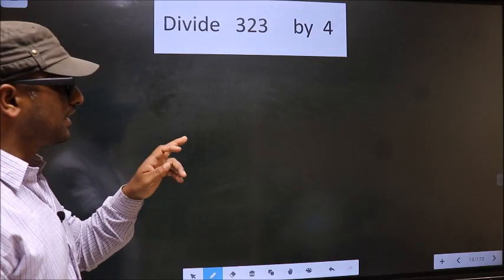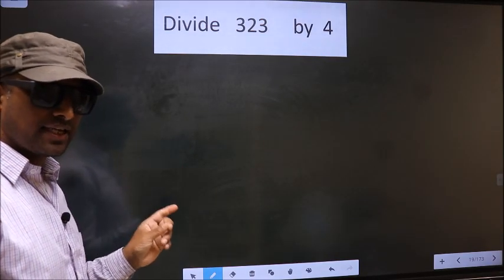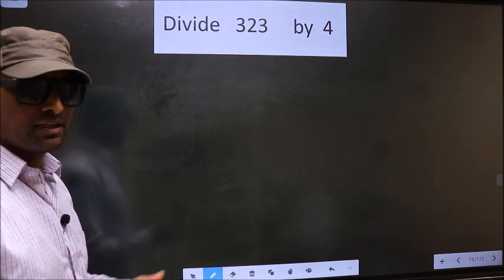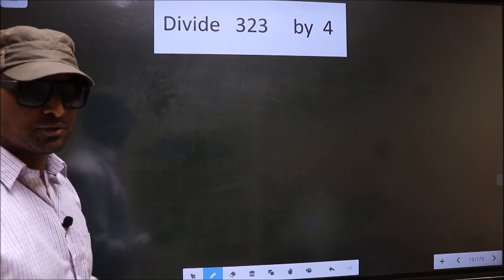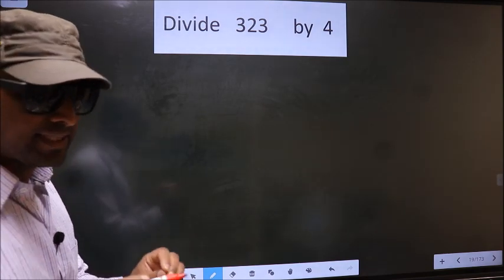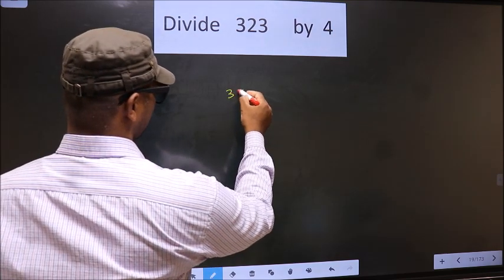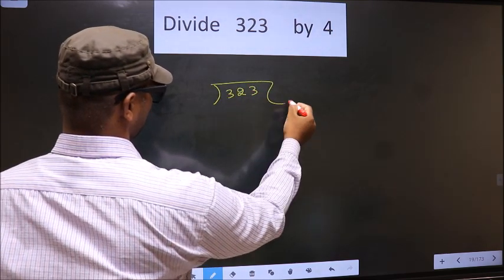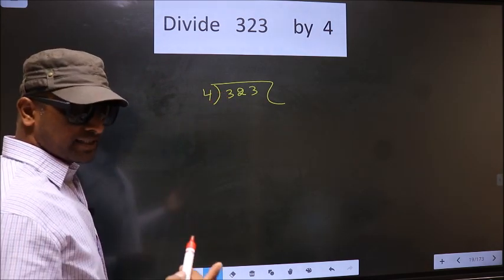Divide 323 by 4. While doing this division, many do this mistake. What is the mistake that they do? I will let you know. But before that, first we should frame it in this way — that is 323 divided by 4.